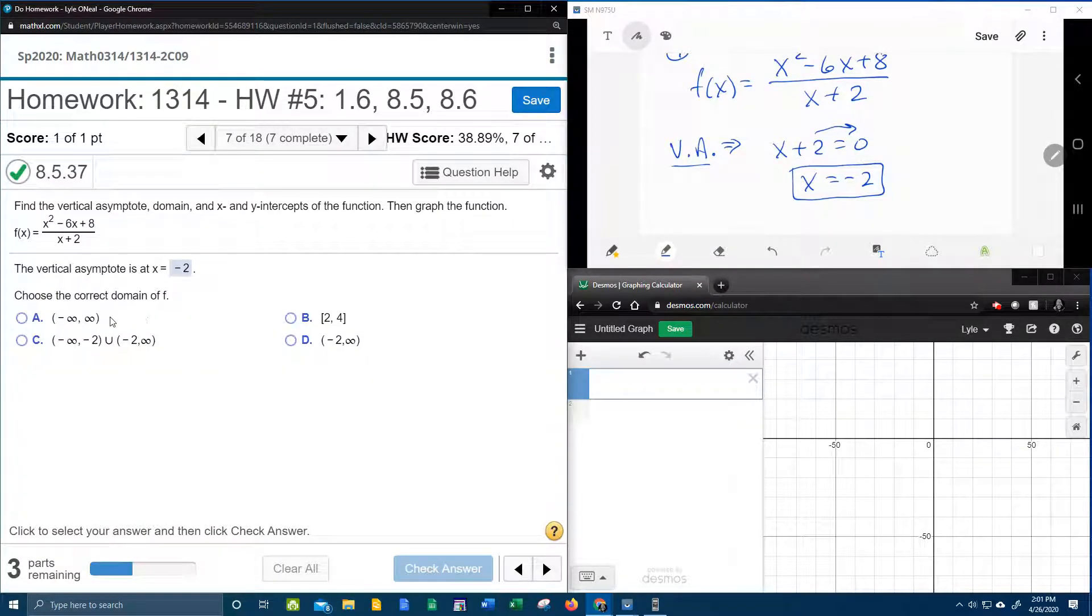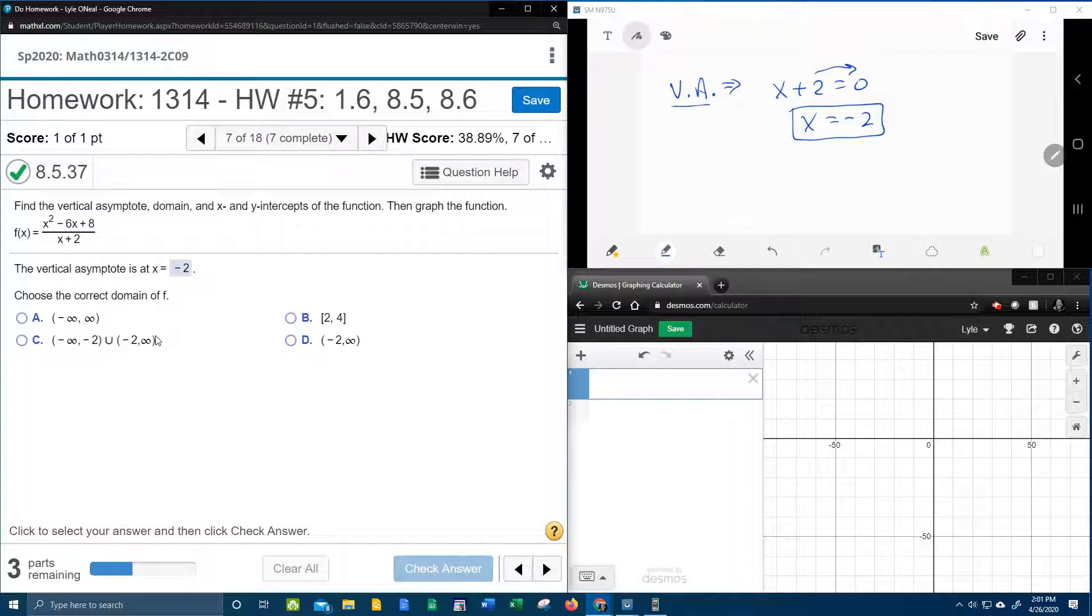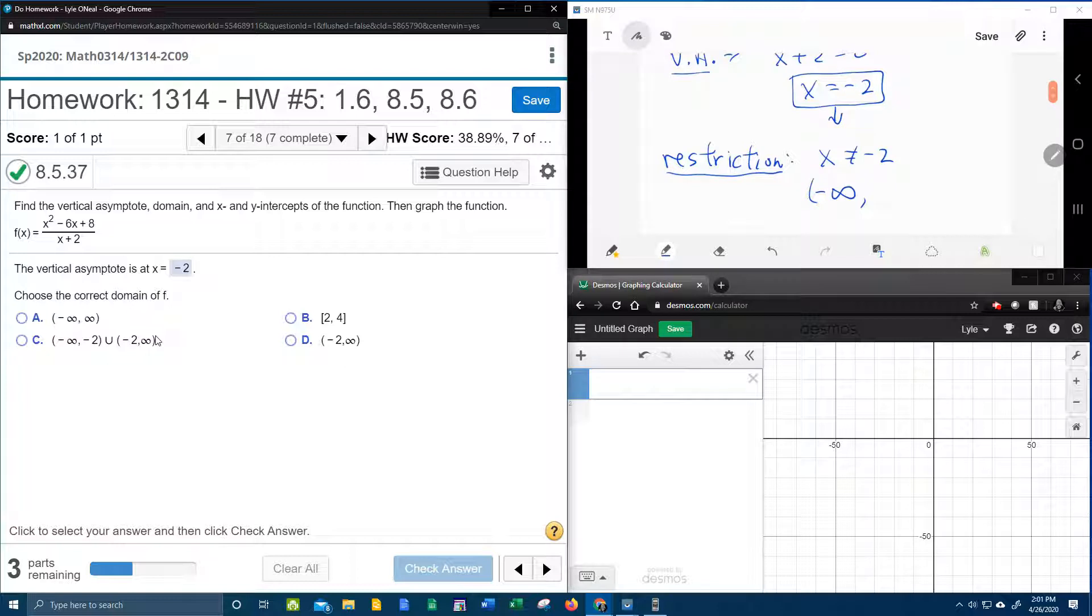Alright, choose the correct domain, and the domain choices, these are in interval notation. And so over here in our window, if we were going to convert to interval notation, what I want you to realize is that if you know the vertical asymptote, then you know the restriction. The restriction of this function is going to be x cannot be negative 2. Those coincide. So if x cannot be negative 2 in interval notation, that means that x can be anything from minus infinity, up to negative 2, not including negative 2, skip over to the other side of negative 2, and keep going. So there is our domain in interval notation.